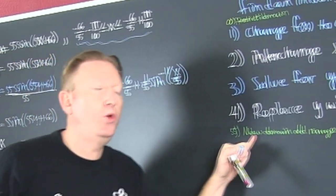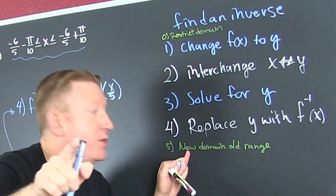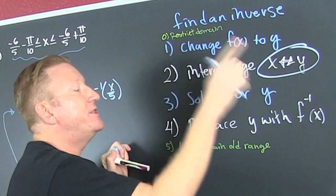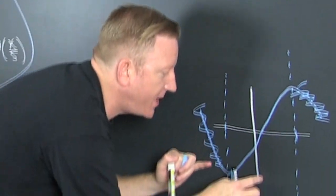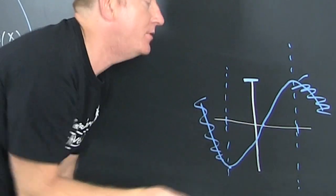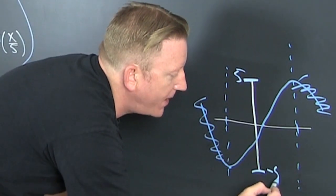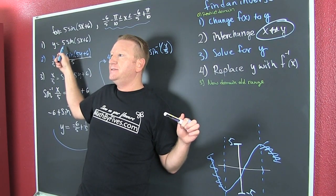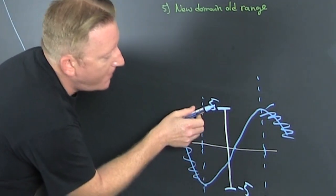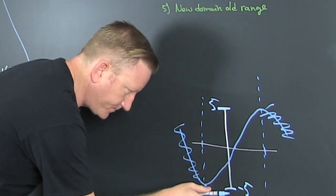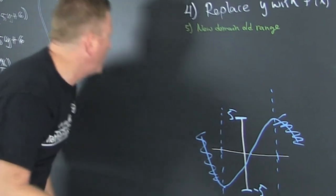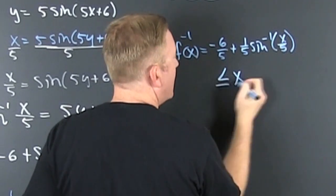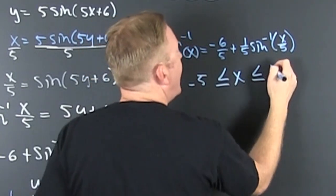But wait — my new domain is my old range, because when you interchange x and y, you're interchanging the domain and range. The amplitude of the old function was 5, so the range was negative 5 to 5. Therefore my new domain — my new x — is bound between negative 5 and 5.